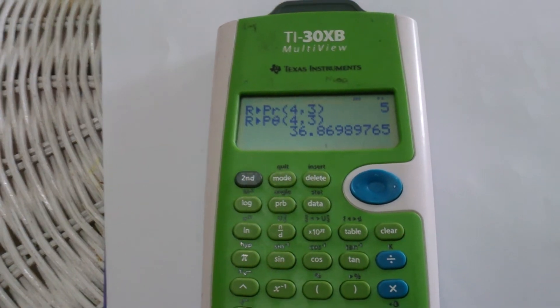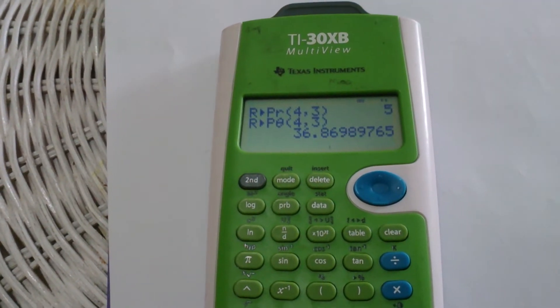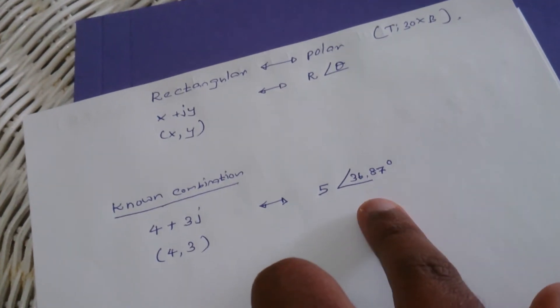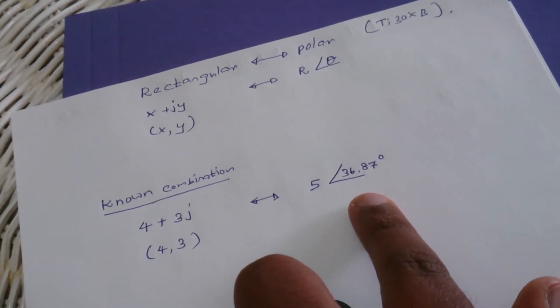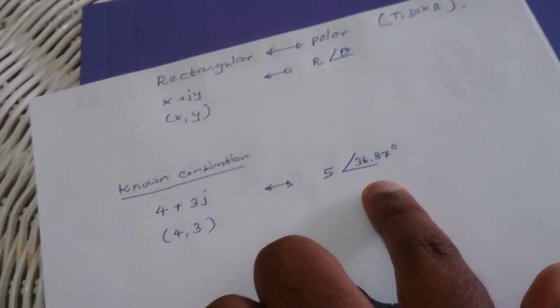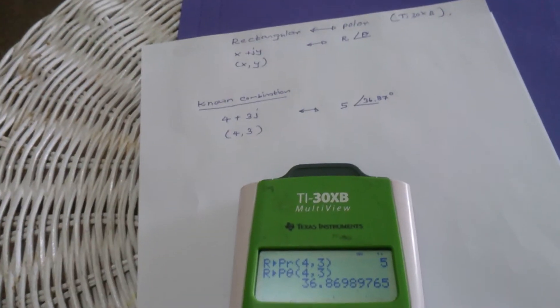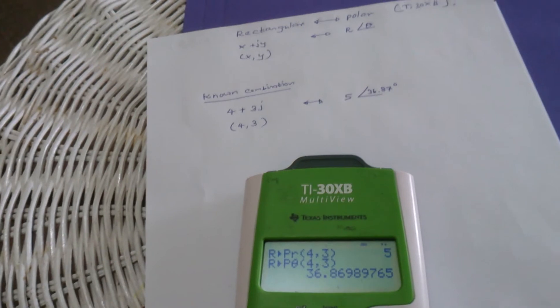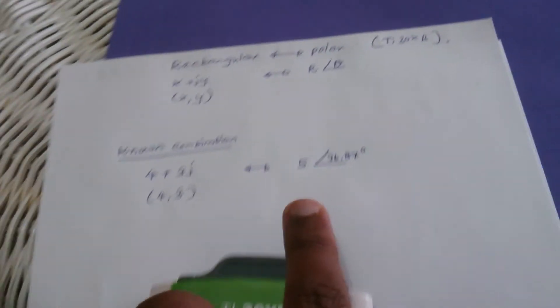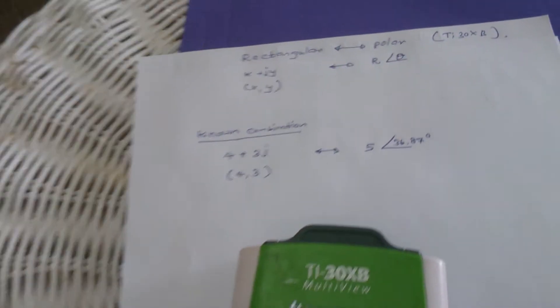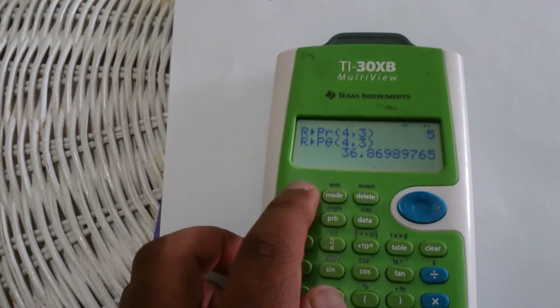Press Enter and you get the angle value in degrees: 36.869, which is as expected. Now you know how to convert from rectangular form to polar form. Next we'll convert from polar to rectangular.